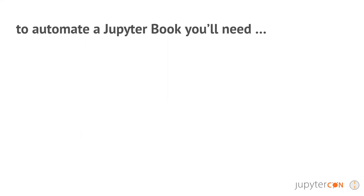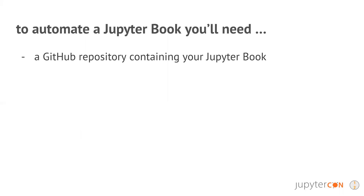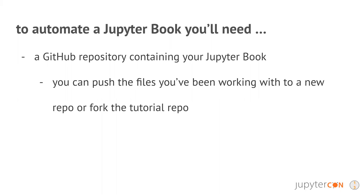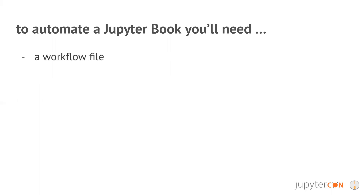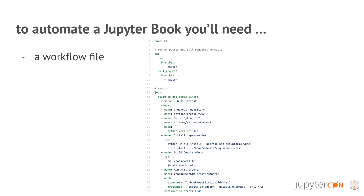To automate a Jupyter Book you will need a GitHub repository containing your Jupyter Book. You can push the files you've been working with so far to a new repository or fork the tutorial repository. You will also need a CI vendor — we will be using GitHub Actions in this tutorial but many other vendors are available. We will also need a workflow file which will look something like this, and the Module 6 Notebook will talk you through creating this file and what each section means.